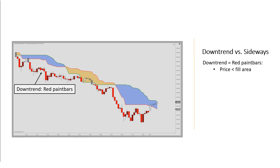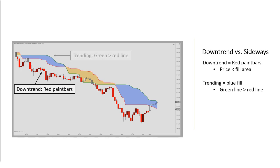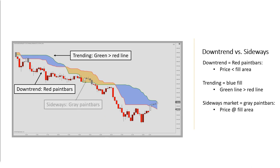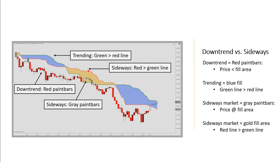Similarly, for a downtrend, we have red paint bars plotting when price has cleared the fill area. A blue fill will again indicate a trending market, with the green line moving above the red line. You see the paint bar coloring change when price moves into the fill area, and the fill coloring also indicates a sideways scenario when the red line is moving above the green line.